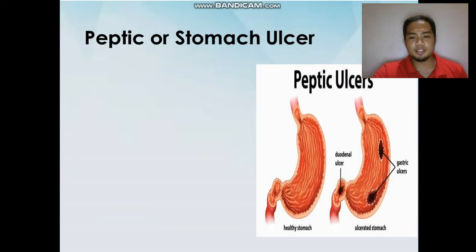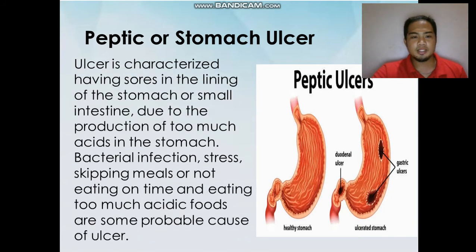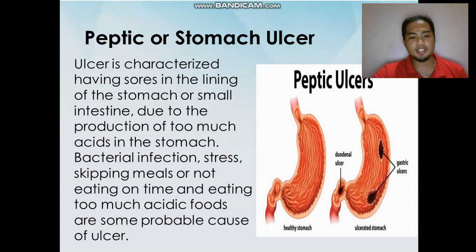Peptic or stomach ulcer is characterized by having a sore in the lining of the stomach or small intestine due to the production of too much acid in the stomach. Bacterial infection, stress, skipping meals or not eating on time, and eating too much acidic foods are some probable causes of ulcer.